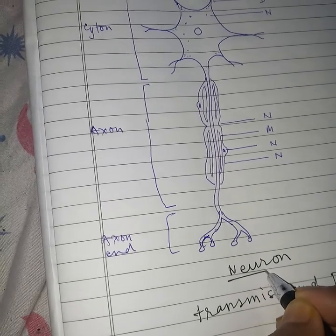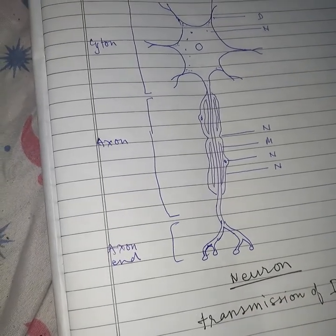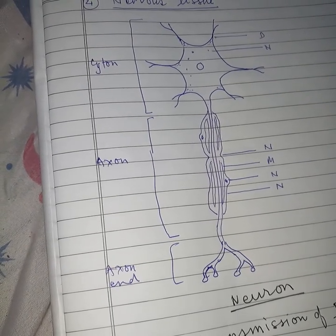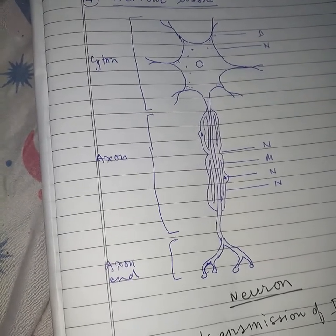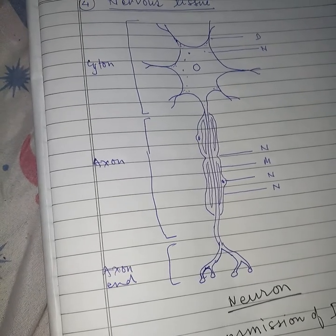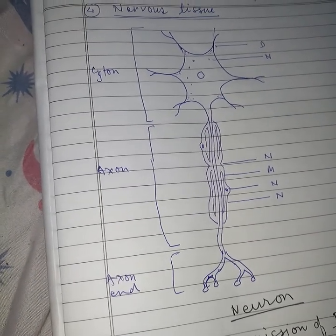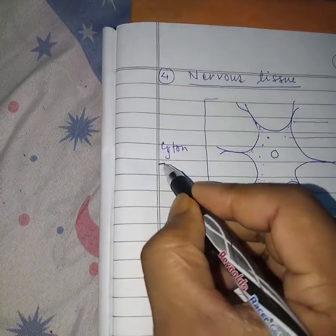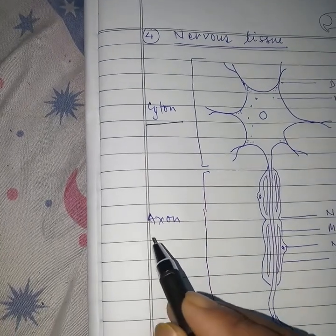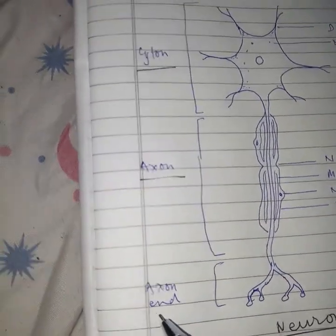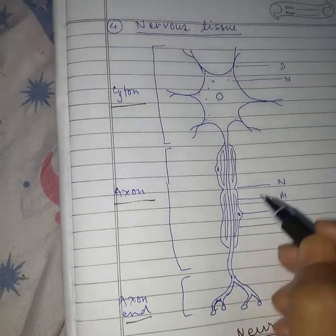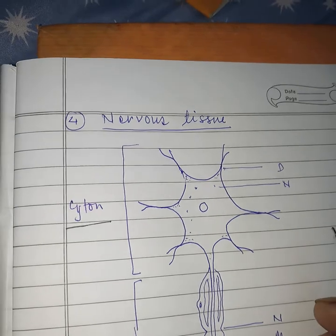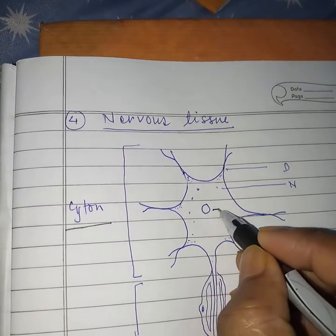The nervous tissue or nervous system consists of a structure called neurons. Neurons are the structural and functional unit of the nervous system. A neuron consists of three parts: first, cytone; second, axon; and third, axon terminals. The cytone is also known as perikaryon or cell body, and it consists of a nucleus.